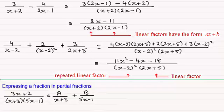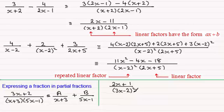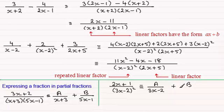So when it comes to examples like this, let's take the example 2x plus 1 divided by the repeated linear factor 3x minus 2 all squared. What kind of partial fractions would we get? Being a repeated linear factor, we're looking at two partial fractions. The first would be a constant — I'll use the letter a — divided by the linear factor 3x minus 2. Then we would get another fraction: a constant b divided by the repeated linear factor 3x minus 2 all squared.